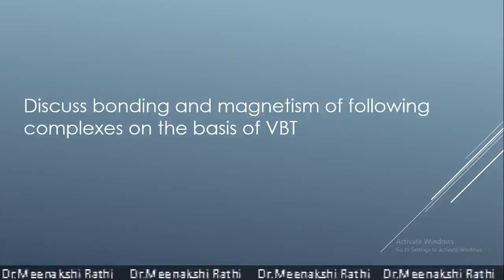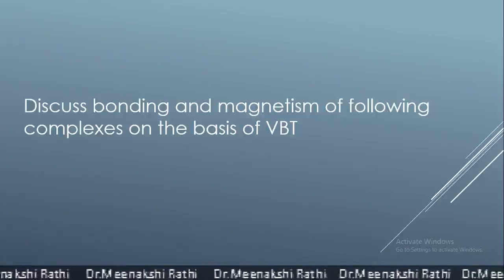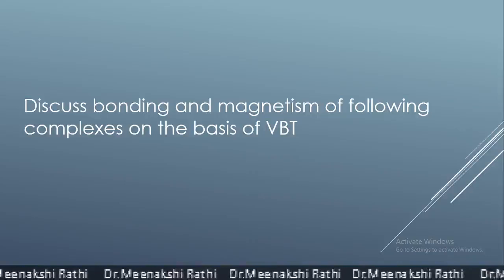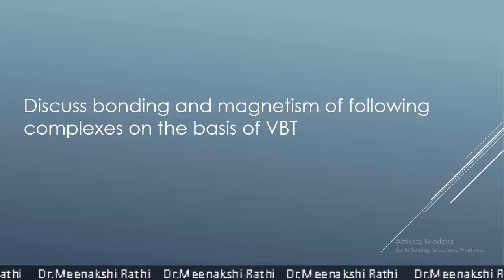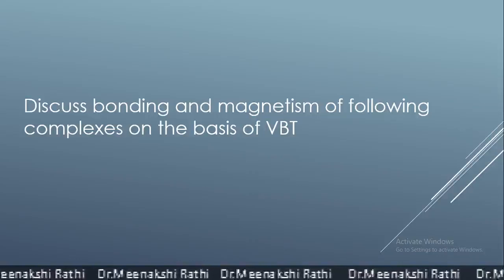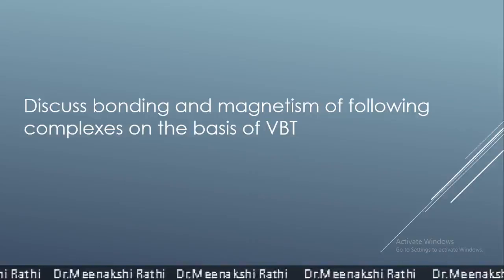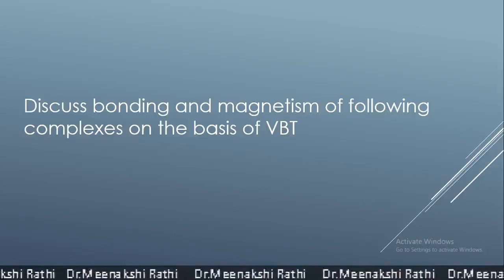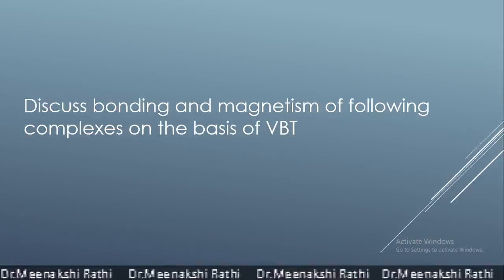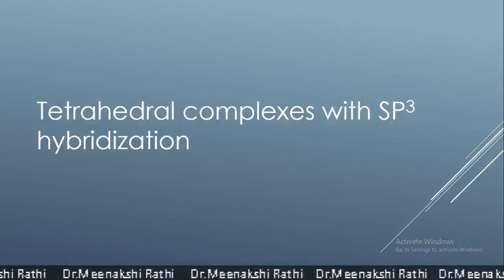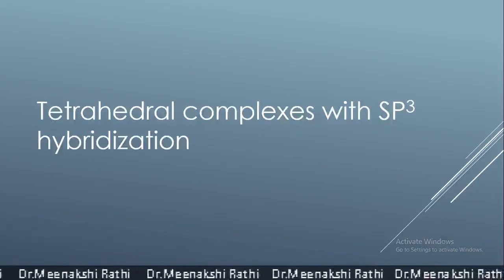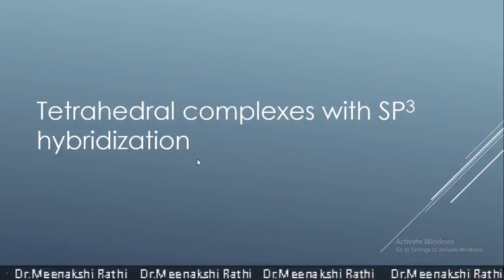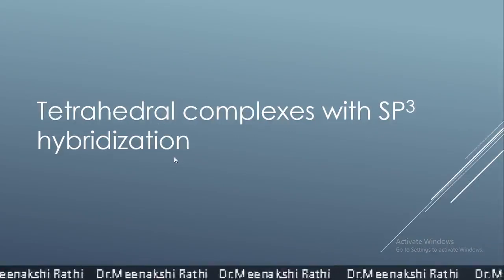Students, we discussed the assumptions of valence bond theory and some related points. Now let us discuss the bonding and magnetism of various complexes on the basis of valence bond theory. Let us begin with some examples. First, we will start with the tetrahedral complexes with sp3 hybridization.